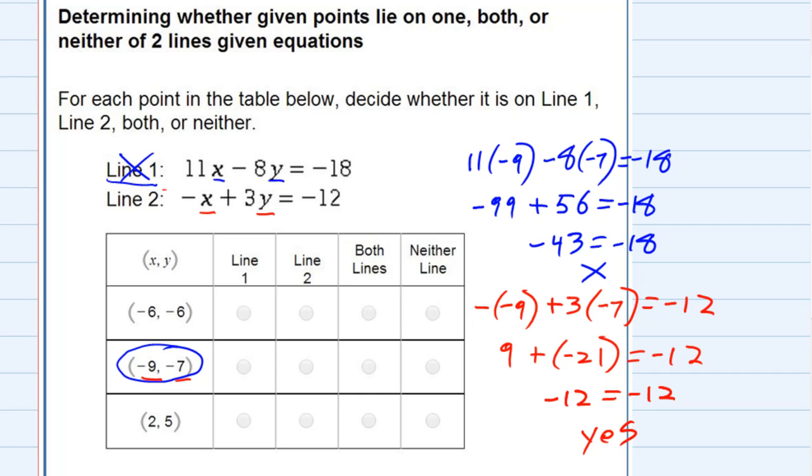So since it only worked for line 2, this would be my selection, just line 2. And then of course I would need to check these two points to determine that row, and these two to determine that row.